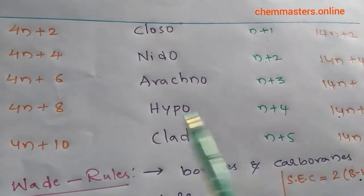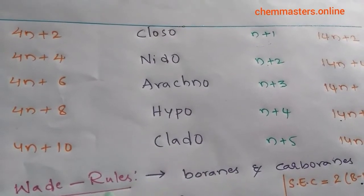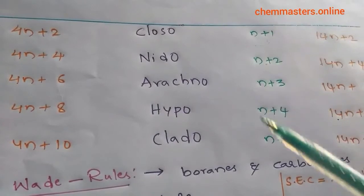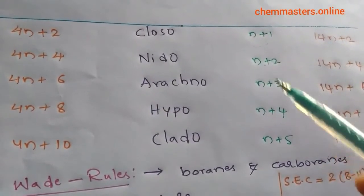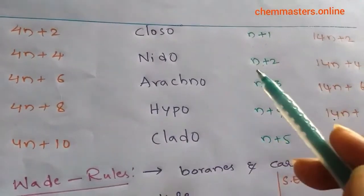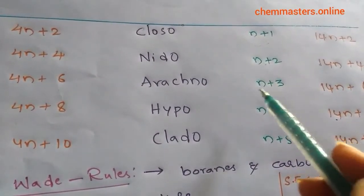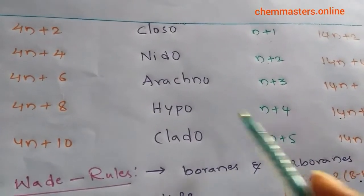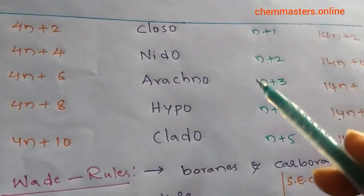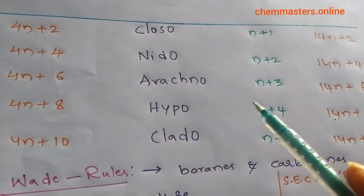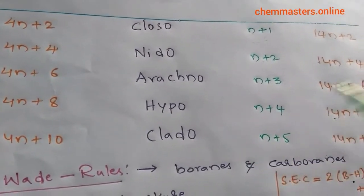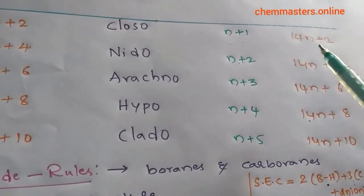We have different kinds of approaches and equations to determine borane clusters. If you observe: n+1 corresponds to closo, n+2 is nido, n+3 is arachno, n+4 is hypo, and n+5 is clado. This first approach is based on the number of paired electrons.